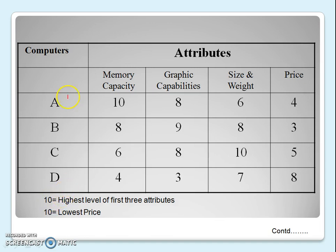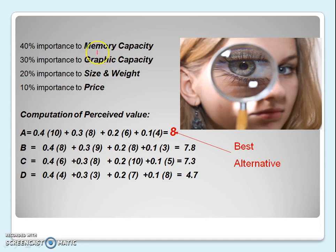For example, a person wants to buy a computer and has shortlisted four brands: A, B, C, and D. He has also shortlisted four attributes that matter most: memory capacity, graphic capability, size and weight, and price. That consumer has rated all four brands on all four attributes on a scale of 1 to 10. For most attributes, 1 is lowest and 10 is highest, but for price, it is reversed — 1 means highest price and 10 means lowest price.